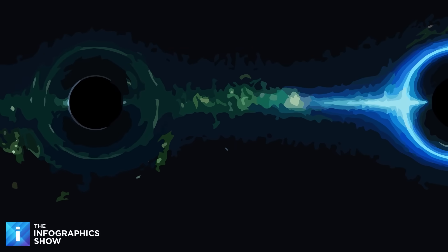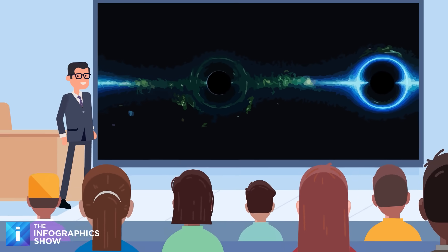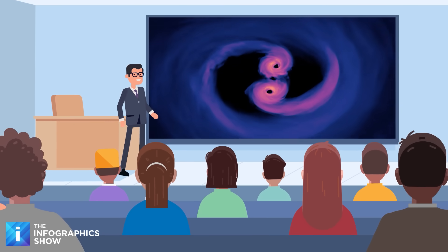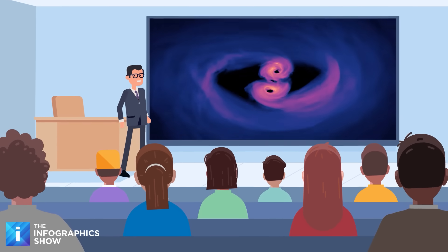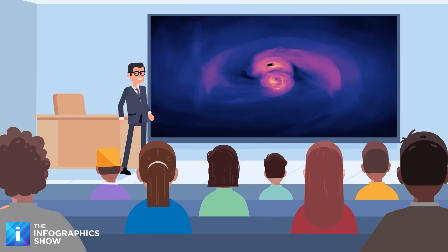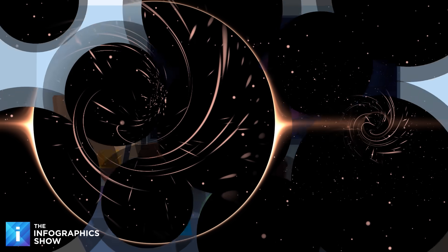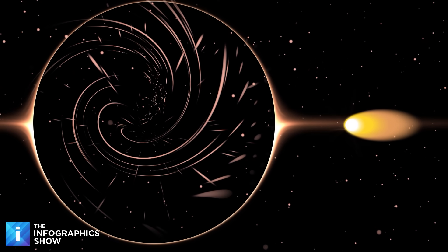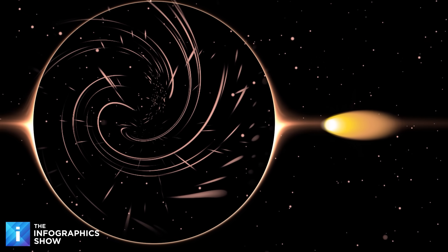Venture further out into space and you would run into primordial black holes, essentially the wildcards of the black hole hierarchy. These theoretical objects could range from microscopic to mountain-sized, formed in the chaotic early moments after the Big Bang. Scientists are not sure they actually exist, but if they do, they could be lurking everywhere, which is more than a little unsettling.